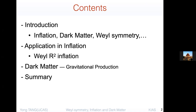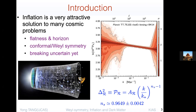I have some backup slides about conformal R-alpha attractor inflation. Most people working in cosmology agree that inflation is a very attractive solution to many cosmic problems, for example the flatness problem and horizon problem. In this figure, on the right-hand side there is a plot where the horizontal X axis is the scale — K is a wave number, larger K means small scale, smaller K means large scale.